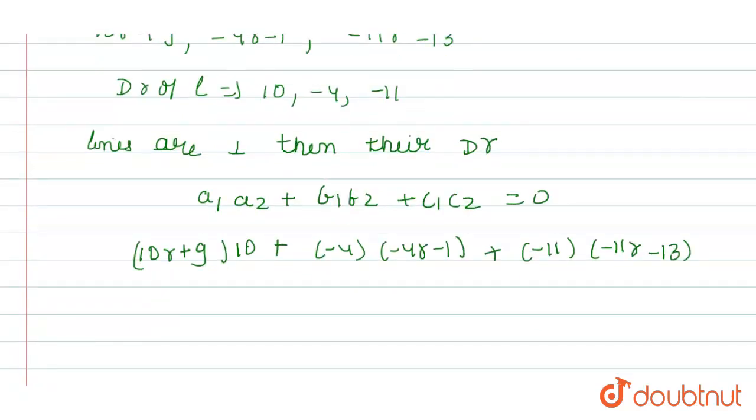So now from here we get 100R + 90 + 16R + 4 + 121R + 143 = 0.